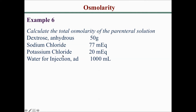Example 6 asks us to calculate the total osmolarity of a parenteral solution given: dextrose anhydrous 50 grams, sodium chloride 77 milliequivalents, potassium chloride 20 milliequivalents, and water for injection added to make 1,000 mL. We are not concerned about the water — only the components: dextrose, sodium chloride, and potassium chloride. We must calculate the osmolarity of each component.